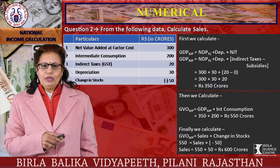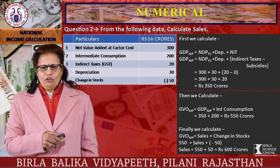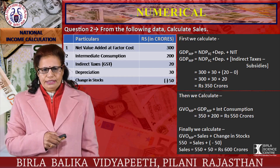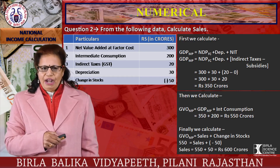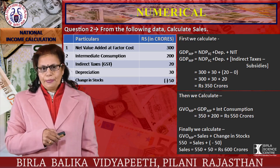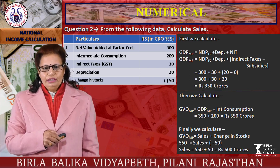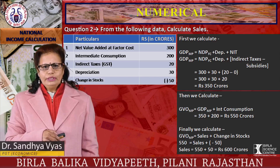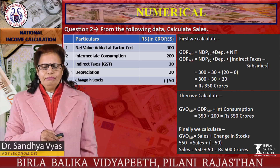In the second numerical, you need to calculate sales, given net value added at factor cost and intermediate consumption. First, calculate GDP at market price: NDP at factor cost plus depreciation plus NIT, putting in the values 300 plus 30 plus 20 minus 10. Then calculate GVO at market price: GDP at market price plus intermediate consumption. Finally, from GVO at market price equals sales plus change in stock, solve for sales. Here we started with NDP because sales was the missing item.